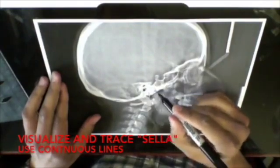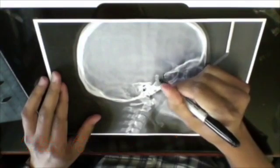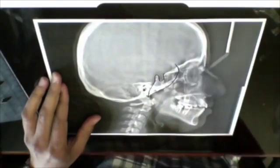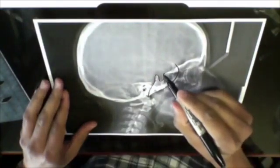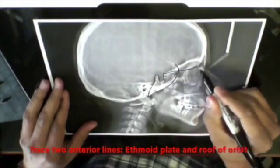I like to start by tracing the anterior cranial base starting with sella and moving on to the anterior portion of the foramen magnum and then the greater wing of the sphenoid, and then you can trace structures anterior to sella which include cribriform plate of ethmoid bone with the roof of the orbit.